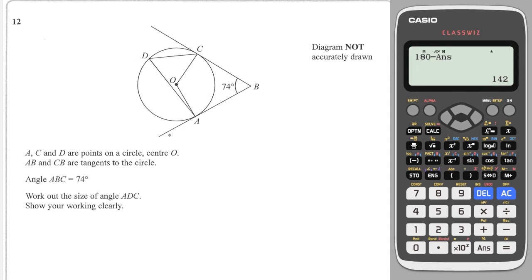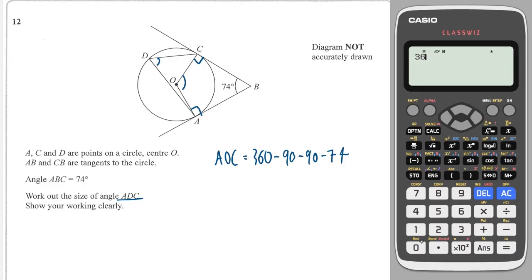Next question: we have tangents meeting at a 74° angle and we're asked to work out angle ADC. Because tangents and radii meet at 90°, I can place right angles in the kite quadrilateral. Angle AOC = 360° − 90° − 90° − 74° = 106°.